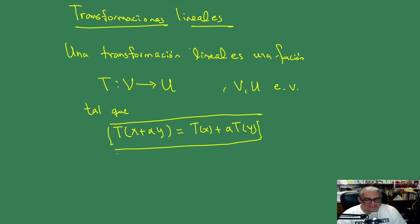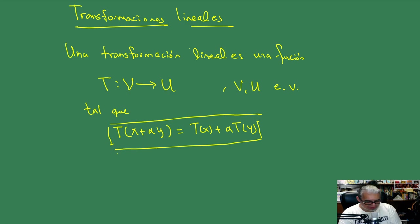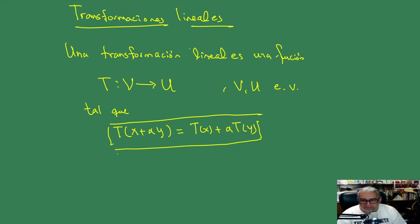¿Por qué nos interesa esa propiedad de linealidad? Porque en el fondo lo que estamos tratando es que la imagen, el conjunto de todos los puntos que provienen de alguno de los otros vía esta transformación, sea también un espacio vectorial. Si la función no es sobreyectiva, pues vamos a tener que la imagen quisiéramos que sea propiamente un espacio vectorial.